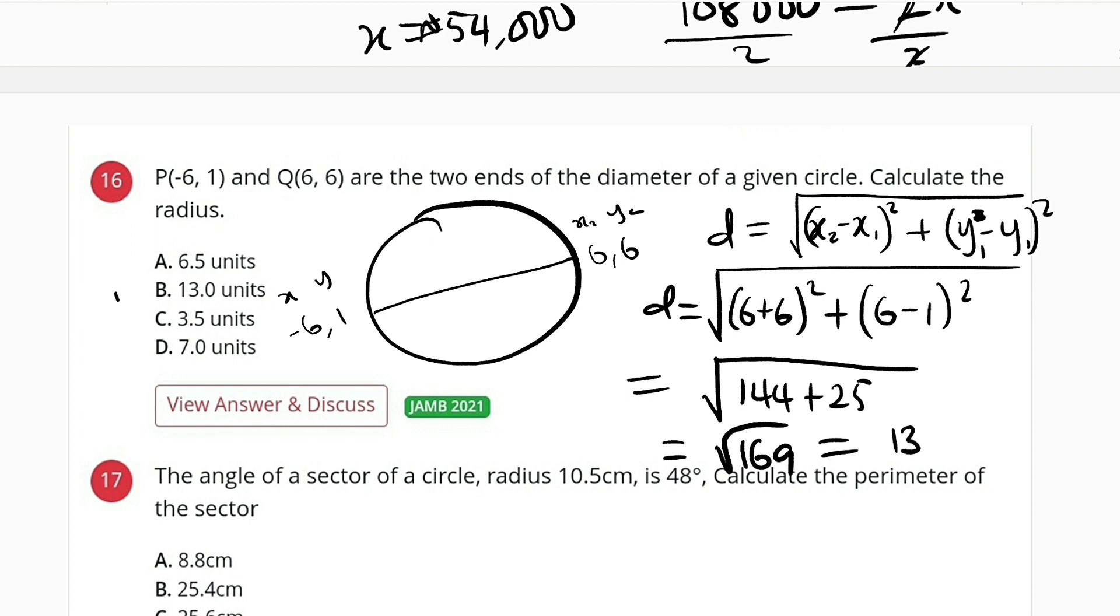You see, we have 13 here. But we are not asked to find the value of the diameter, rather the radius. Therefore, radius will be diameter divided by 2. And this is equal to 13 divided by 2, which is 6.5. Therefore, r is equal to 6.5 units. So we have it as option A.